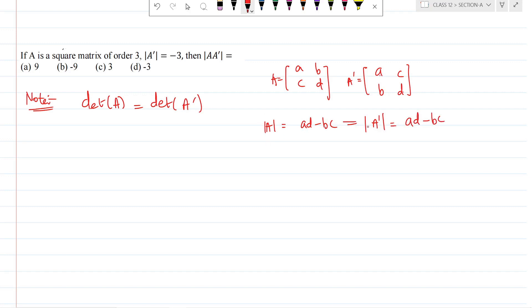Determinant of A and determinant of A dash is same, they are always equal. One more property: determinant of AB is equal to determinant of A times determinant of B, which is equal to determinant of BA.